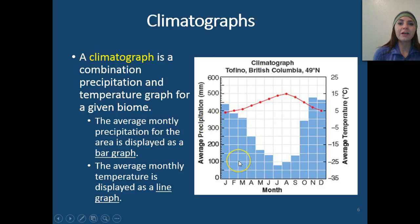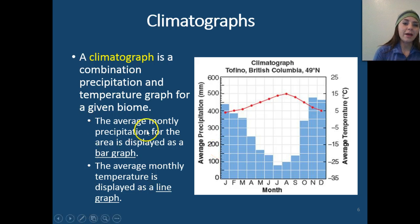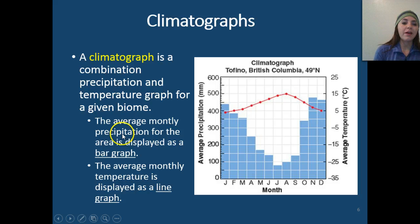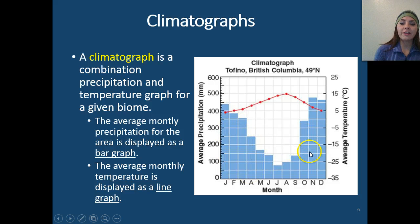One way we give examples of climates is through a climatograph, which shows the climate of a given biome. A climatograph is a combination of precipitation and temperature data: the average monthly precipitation is displayed as a bar graph, and the average monthly temperature is displayed as a line graph.